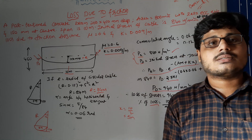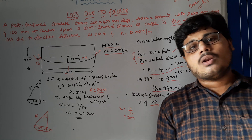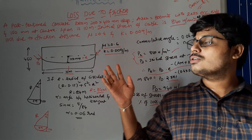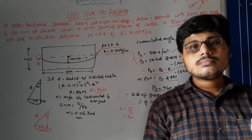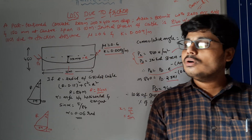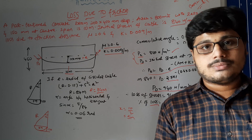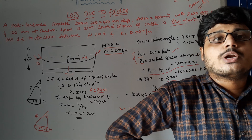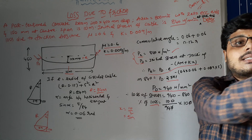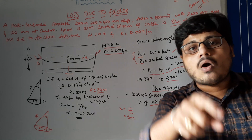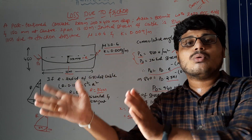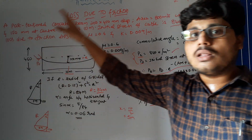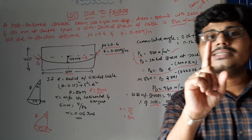We have now discussed all the losses in pre-stressed concrete: loss due to elastic shortening, loss due to shrinkage, creep, and loss due to friction. In your examination, they will ask for 14 marks — calculate the pre- or post-tension losses for a given problem. This means you should calculate all the losses in a single problem.